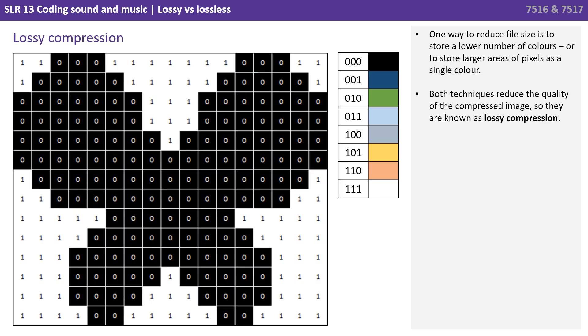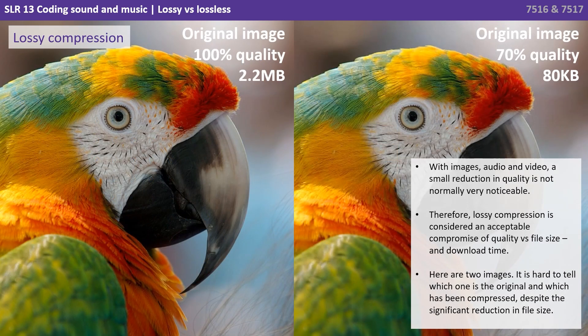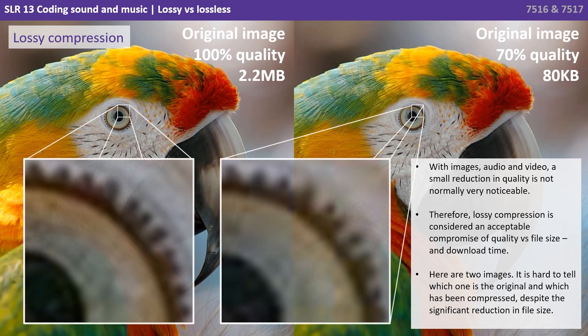Both techniques will reduce the quality of the compressed image, so they're known as lossy compression. With images, audio and video, a small reduction in quality is not normally very noticeable. Therefore, lossy compression is considered an acceptable compromise of quality versus file size and download time. Here are two images — it's hard to tell which one is the original unless we zoom in and look really closely, despite the fact that we've got a significant reduction in file size.